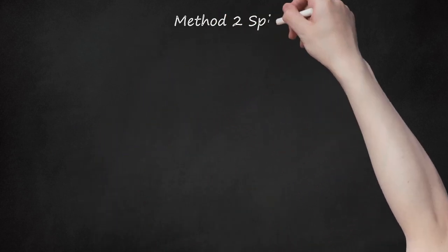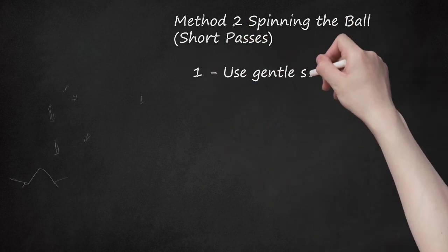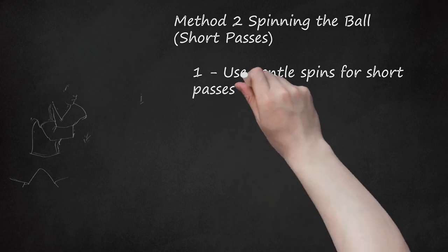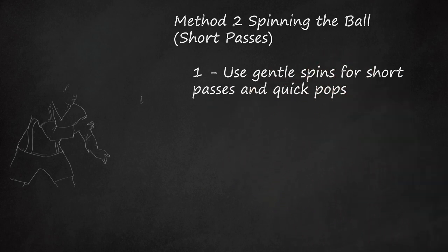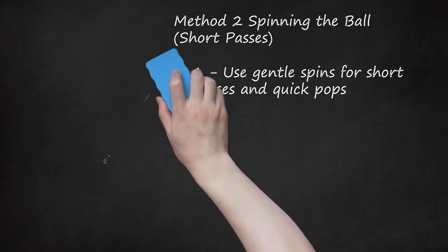Method 2: Spinning the Ball (Short Passes). Use gentle spins for short passes and quick pops. Spinning the ball keeps it stable, meaning that your teammates can prepare their hands to grab the ball seamlessly out of the air instead of trying to manage a wildly flailing or rotating ball. A simple spin pass is one of the quickest ways to move the ball short distances. Accuracy is always more important than spin, so make sure you're hitting your target on throws first.